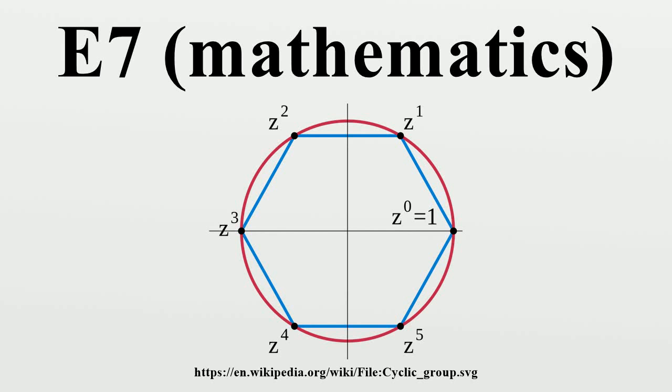In mathematics, E7 is the name of several closely related Lie groups, linear algebraic groups, or their Lie algebras, all of which have dimension 133.